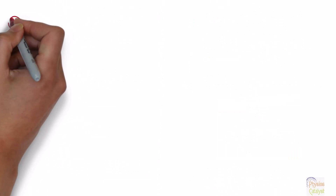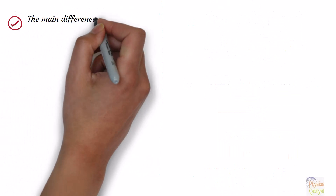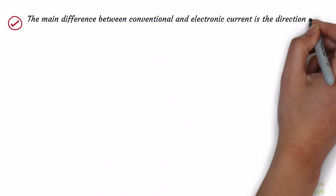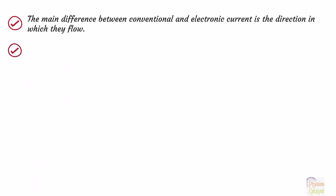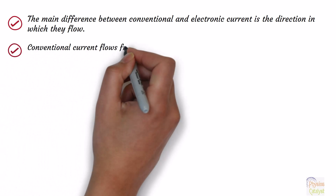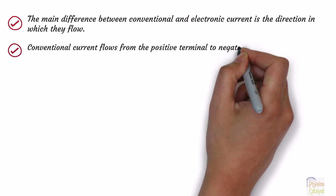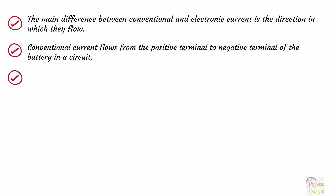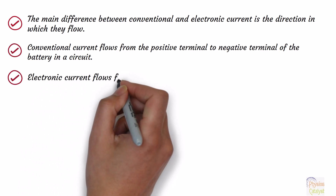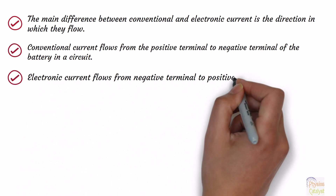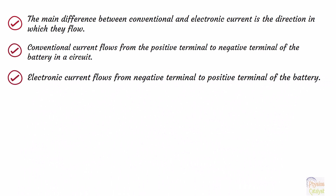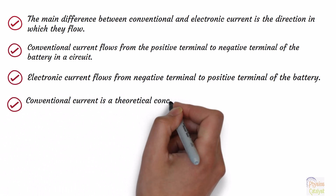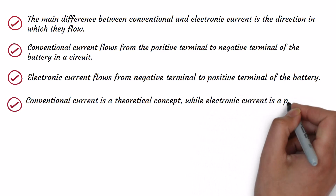Now let's look at the differences between these two types of current. The main difference between conventional and electronic current is the direction in which they flow. Conventional current flows from the positive terminal to the negative terminal of the battery in a circuit. On the other hand, electronic current flows from the negative terminal to the positive terminal of the battery. Another difference is that conventional current is a theoretical concept, while electronic current is a physical phenomenon.